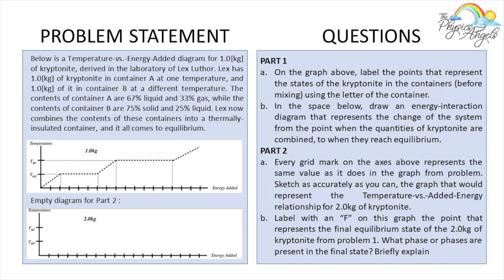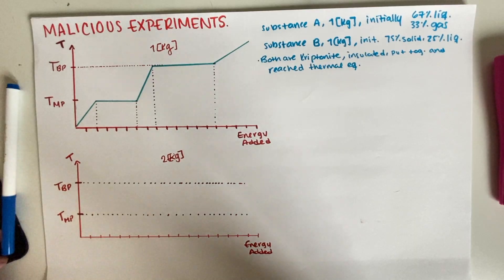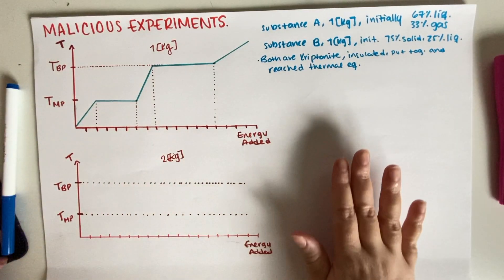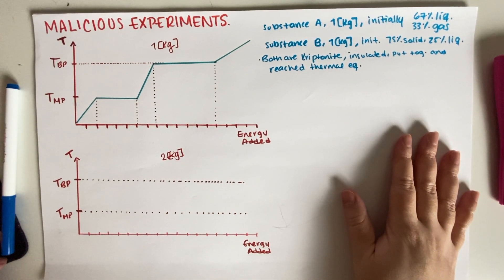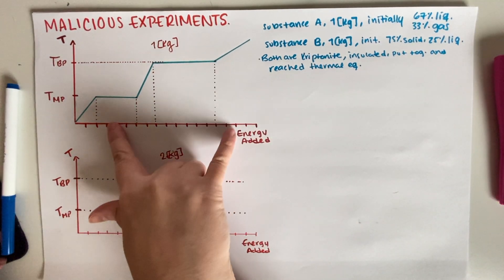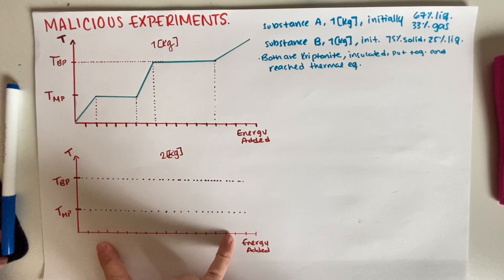The first thing we have to do is label the points on the graph above that represent the states of the kryptonite. Then we have to draw an energy interaction diagram that represents the change of the system. Part two we'll get to in a second — let's do part one first. I have everything written down over here; this is the original graph and this one is for part B.